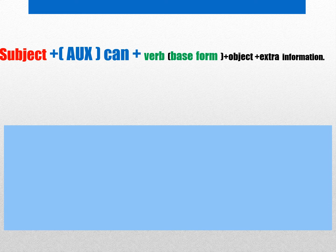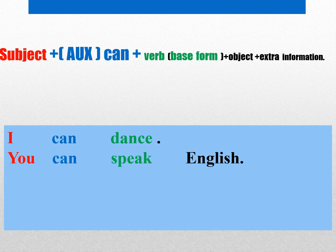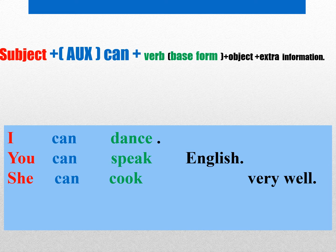خب می‌دیم ساختارش که خیلی راحته. مثل همیشه: subject، auxiliary، verb و ادامه‌اش object، extra information. Subject مشخصه، auxiliary که 'can' هست، بعد verb و ادامه‌اش می‌تونه باشه یا نباشه. For example: 'I can dance.' 'You can speak English.' اینجا English objectه. 'She can cook very well.' — object نداره اما extra information به عنوان adverb داره: very well.